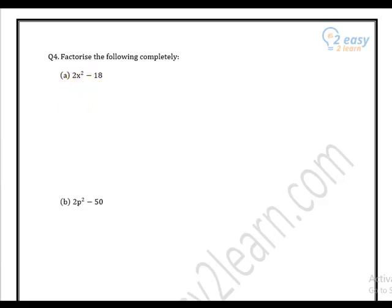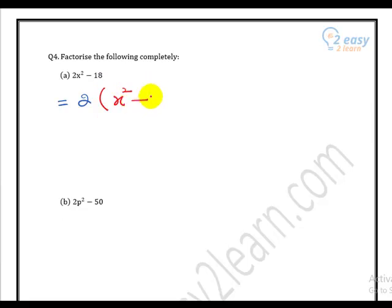What number is common? Two is common here. What is left inside the bracket is x squared minus nine. Students, this question is usually worth two marks.